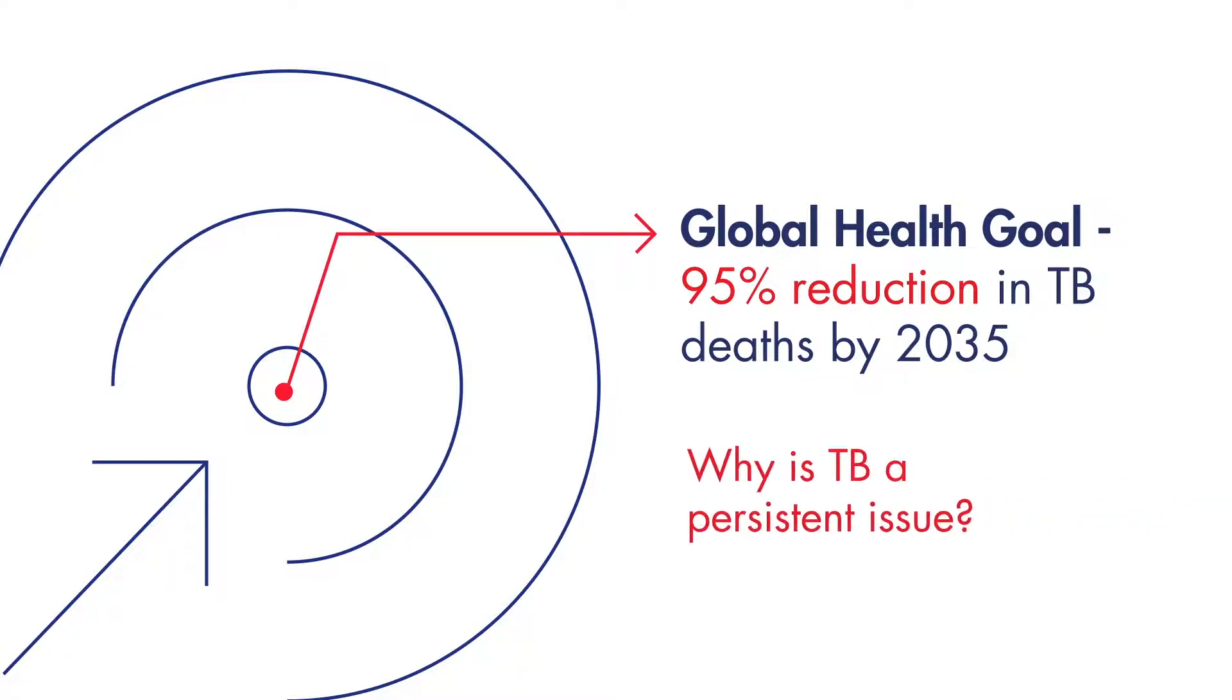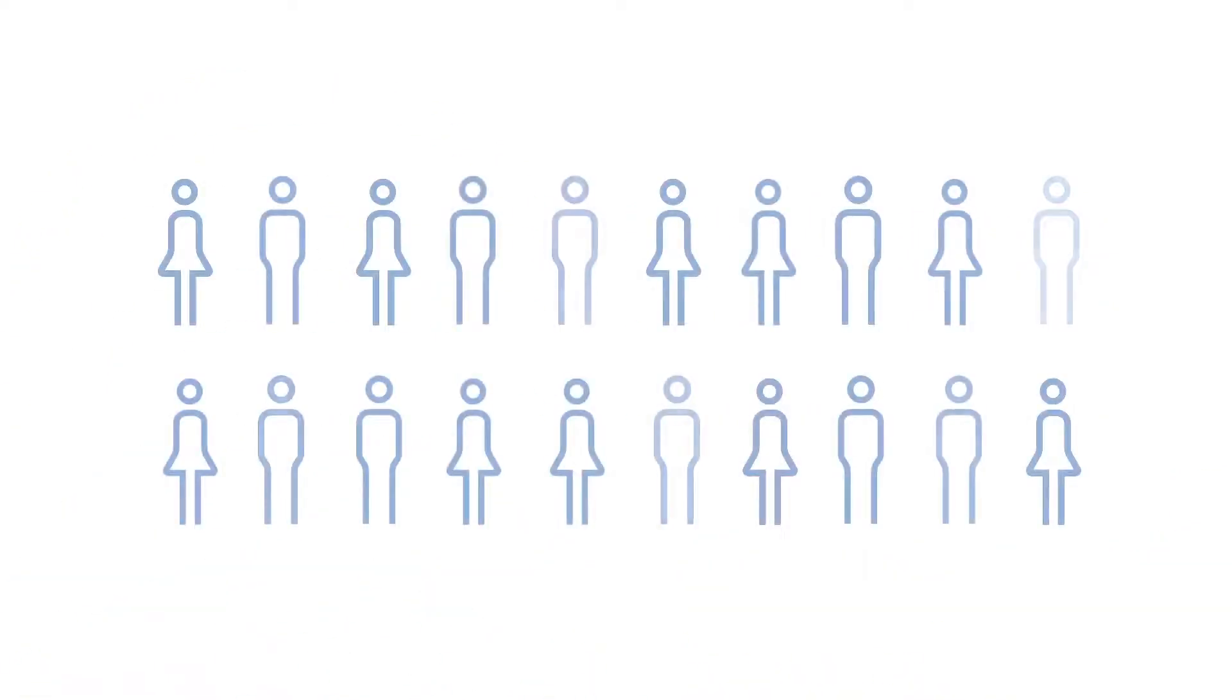So why is TB still a persistent issue? The majority of TB infection occurs in a latent form. These individuals are not contagious and show no signs or symptoms of the active disease. This is the silent threat.